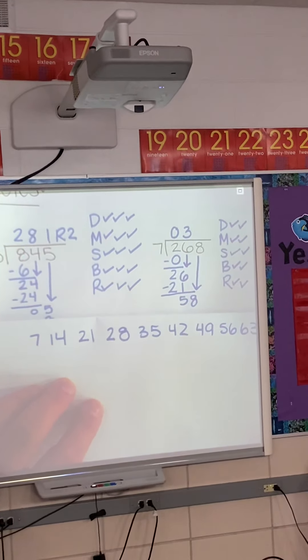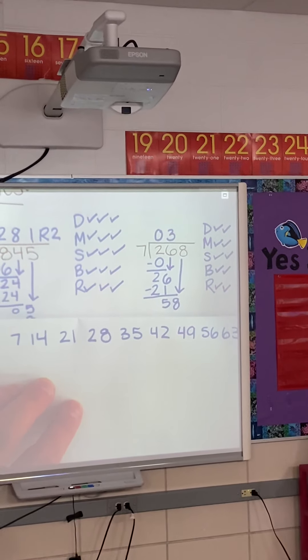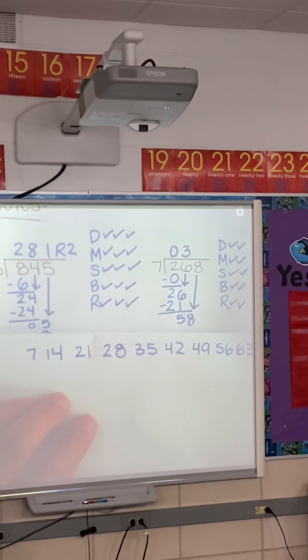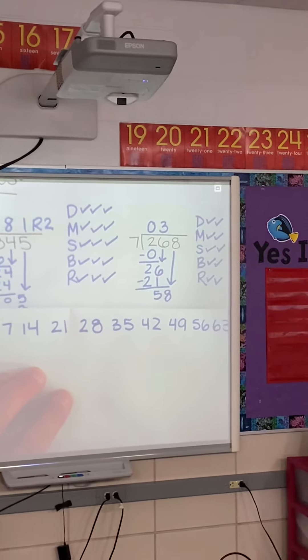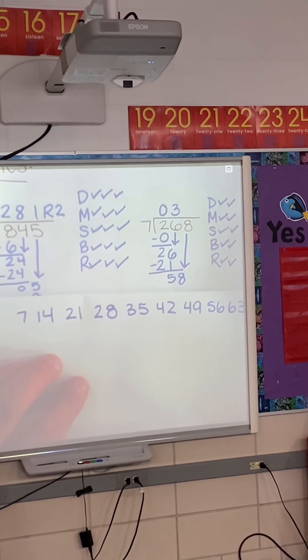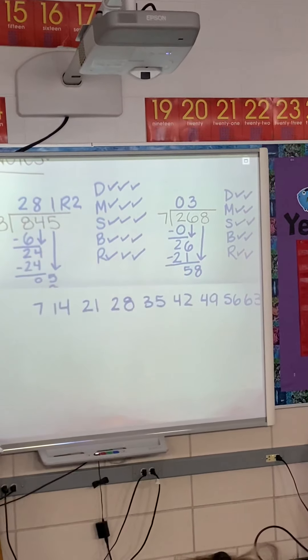What should I be thinking now? What am I looking for now? Brooklyn, what should I be looking for? What's closest to 58 in the table of seven? Exactly. What's that going to be? 49. Oh, 58. 56. 56.